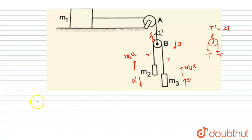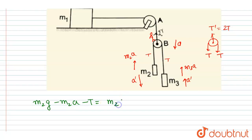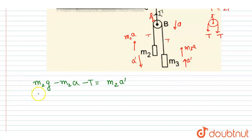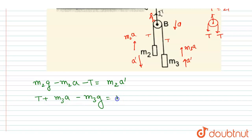Now writing the force equation on m2: m2*g minus m2*a minus t equals m2 times a'. For the m3 block: t plus m3*a minus m3*g equals m3 times a'.